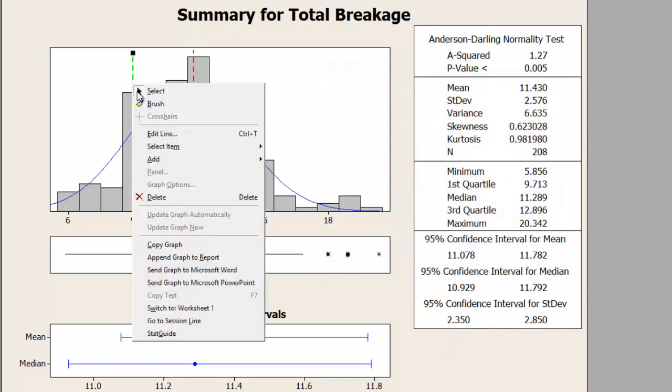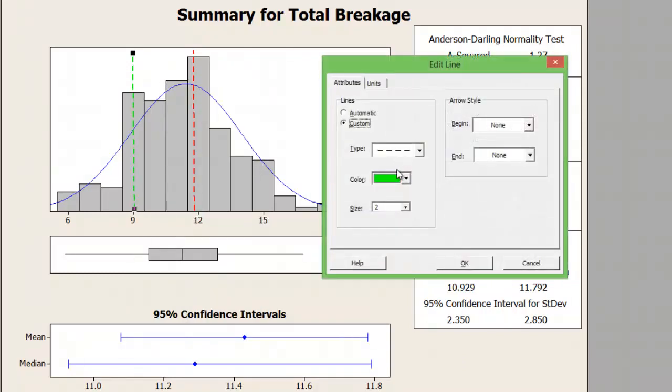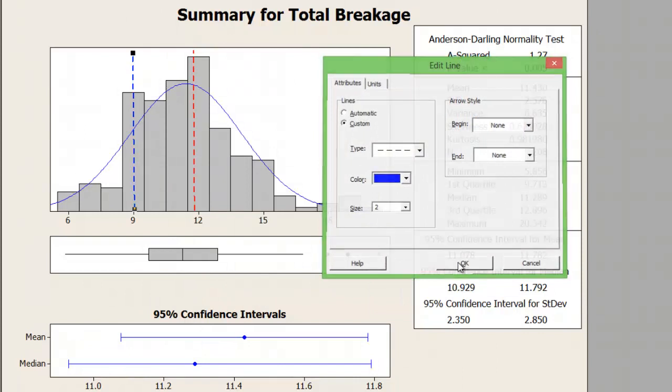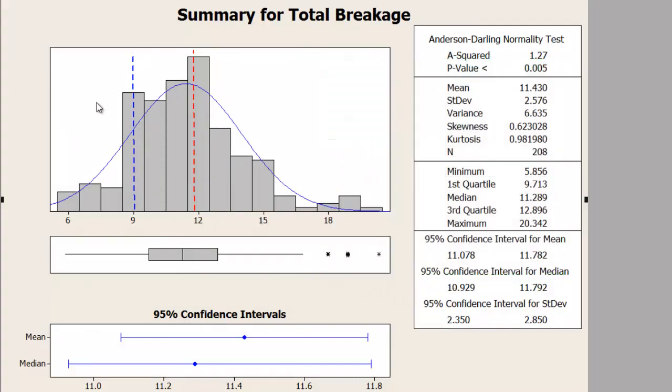Let me change the color. So the blue depicting the target, the red depicting my current as-is central tendency. If you see, every data item beyond the 9 is a defect.